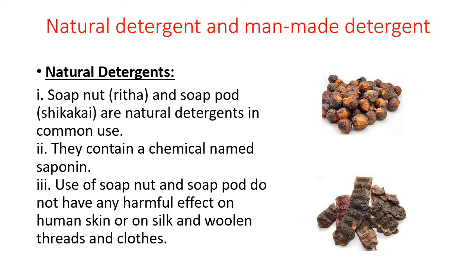There are two types of detergents: natural detergents and man-made detergents. Soap nut and soap pod — like reetha — are natural detergents available in nature, not man-made. In the olden days, before soap was invented around two thousand years ago, people used soap nuts and reetha for cleaning their hair and body.